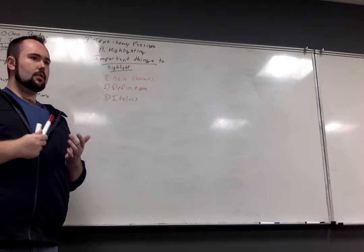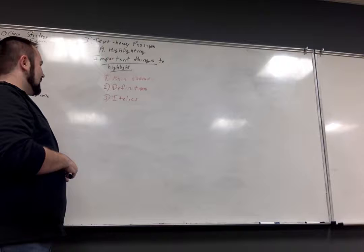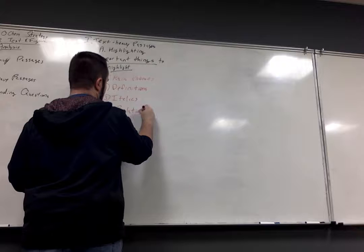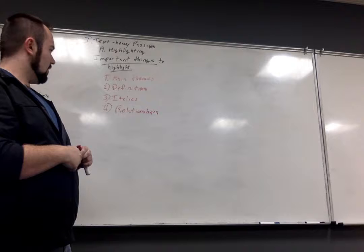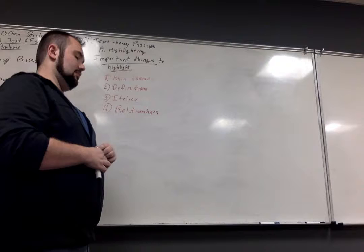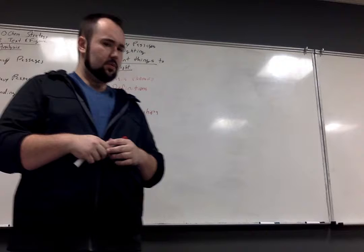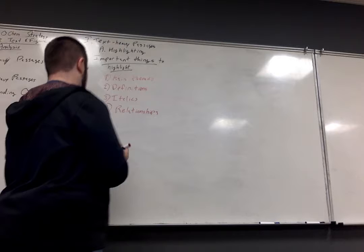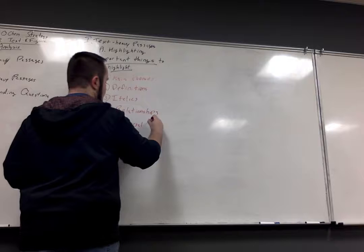There are two more that are a little bit less obvious. One of them is relationships. If we talk about a trend or a relationship between two different concepts, we should be highlighting that and trying to elucidate it from our passage. The other thing — very related to one we already have — is that as we highlight our main themes, we also want to make note of any reversals to that main theme, any times they basically go against something they said before.